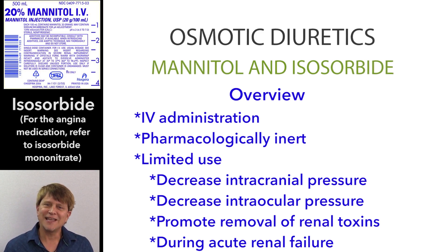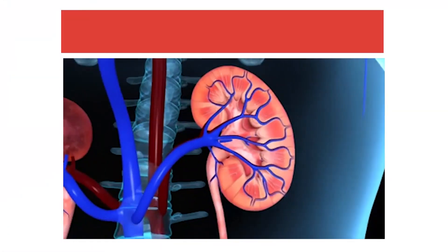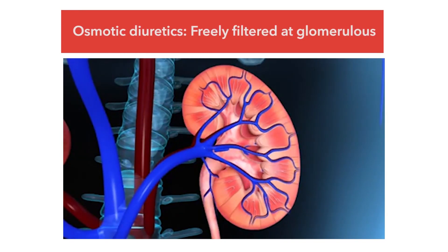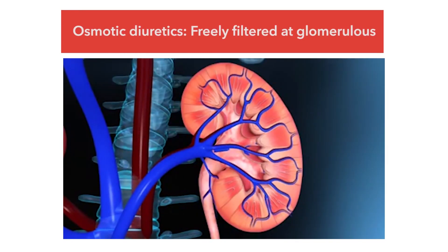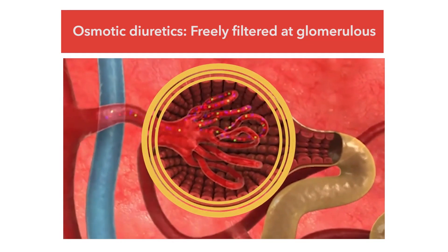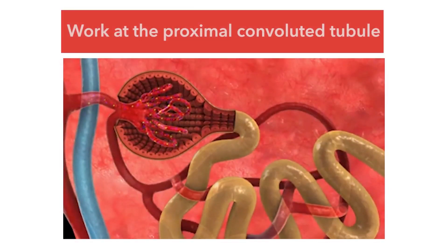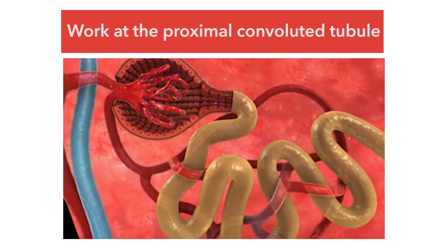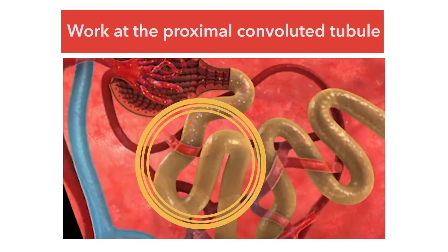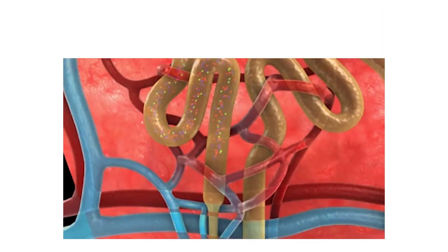So let's take a look at what's happening at the level of the nephron with the osmotic diuretics. The osmotic diuretics, such as mannitol and isosorbide, are going to be freely filtered at the glomerulus, and then they'll exert their primary action at the level of the proximal convoluted tubule and the descending loop of Henle.